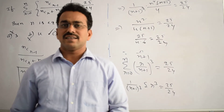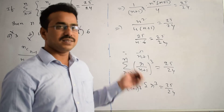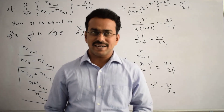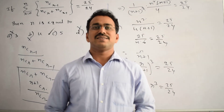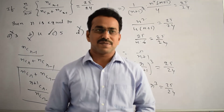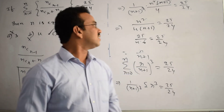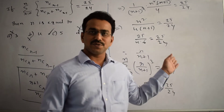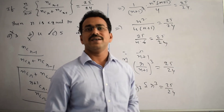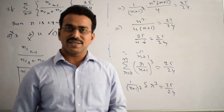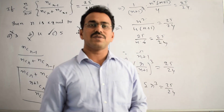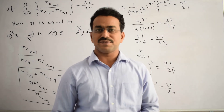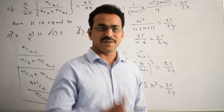The key results used here are the simple formulas from binomial coefficients and the summation formula: summation R cubed equals N squared times (N+1) squared divided by 4. Thanks for watching. All the best.